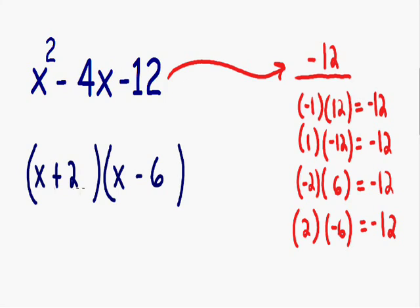And positive 2 plus negative 6 gives us our negative 4. And now we have completely factored our trinomial.